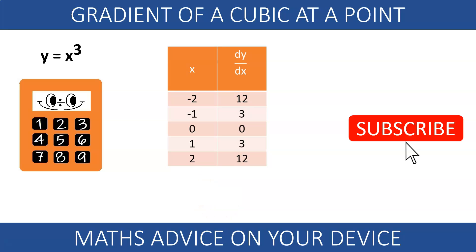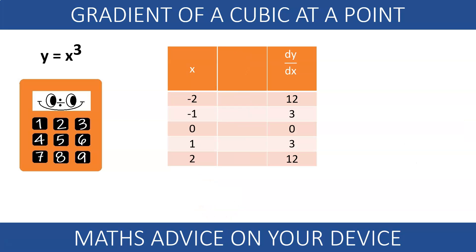Perhaps it's easier if we break it down a bit more. After all, calculus is all about breaking big problems into small ones. Minus 2 squared is 4. Minus 1 squared is 1. Zero squared is zero and so on. Can you now see the link between x squared and the gradient?